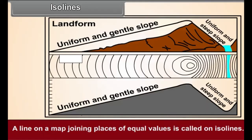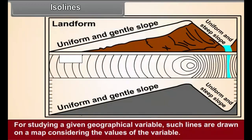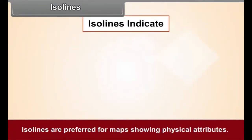Isolines. A line on a map joining places of equal values is called an isoline. For studying a given geographical variable, such lines are drawn on a map considering the values of the variable. Isolines are preferred for maps showing physical attributes.